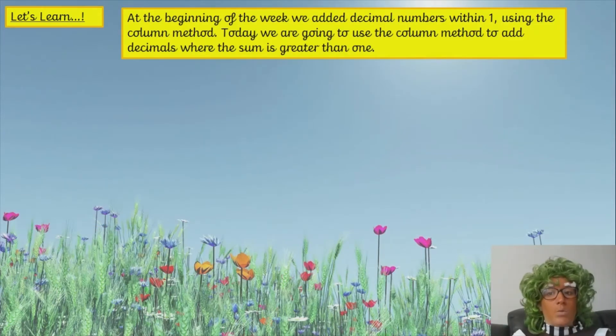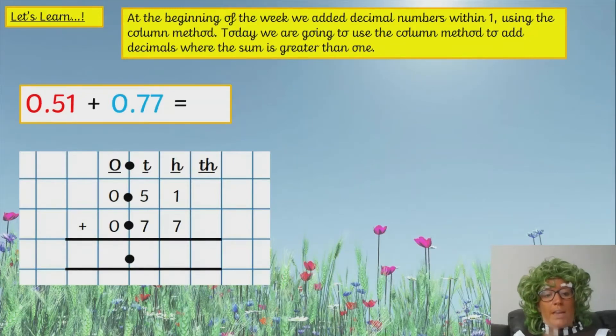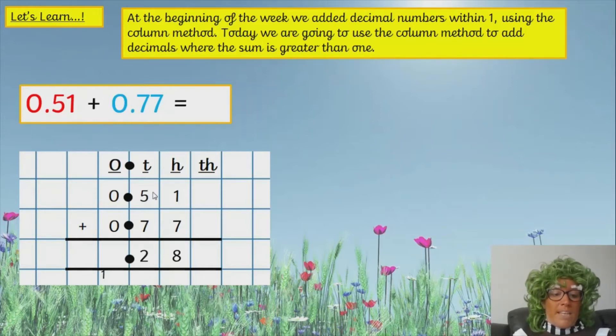So, at the beginning of the week, we added decimal numbers within 1 using the column method. Today, we're going to use the column method again to add decimals where the sum is greater than 1. So, all of the answers will be 1 or more. So, we've got 0.51 plus 0.77. Now, as a column method, we know that we need to start off with the right-hand side. So, we're going to do 1 add 7, which we know is 8. We're then going to do 5 add 7, which is 12. So, our 2 goes in underneath our tenths, and then we're going to carry our 1 over, because it's the same as if we're exchanging with our counters. And then we can continue with 0 plus 0 is 0, but we must remember to add this 1 on. So, our answer is 1.28. So, it's exactly the same as column addition, but we're just using decimals instead.